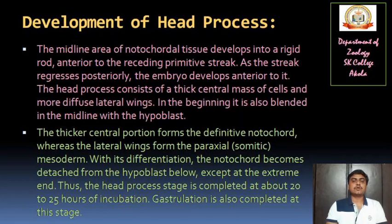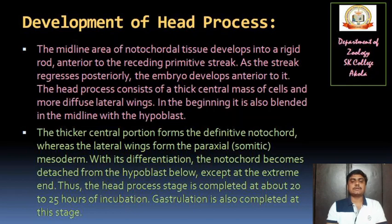The head process consists of a thick central mass of cells and more diffused lateral wings. In the beginning it is also blended in the midline with the hypoblast. The thicker central portions form the definitive notochord, whereas the lateral wings form the paraxial somatic mesoderm. With its differentiation the notochord becomes detached from the hypoblast below, except at the extreme end. Thus the head process stage is completed at about 20 to 25 hours of incubation, and gastrulation is also completed at this stage.